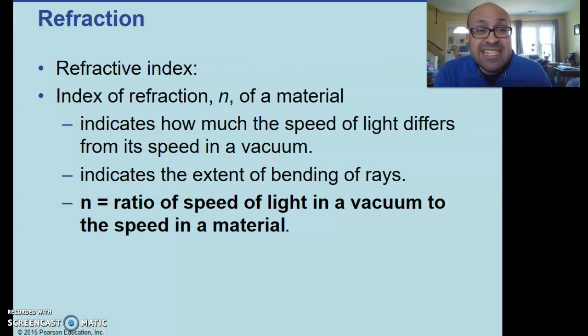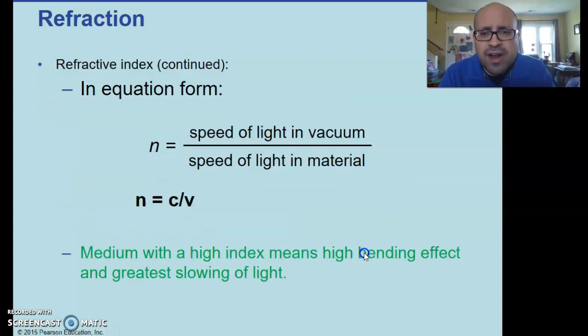Next we have this thing called the index of refraction. Let's take a look at what that is, and then we're going to get into Snell's Law. So the index of refraction, symbolized by lowercase n, is the ratio of the speed of light in a vacuum to the speed of light in that material. I suppose I should add the word average speed of light, but you get the idea. n, lowercase n, represents index of refraction.